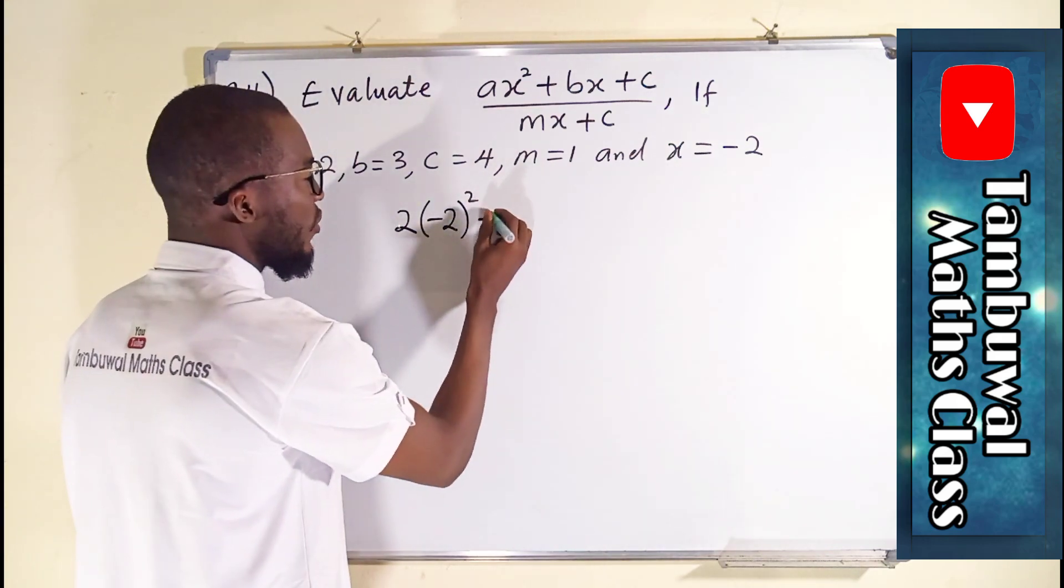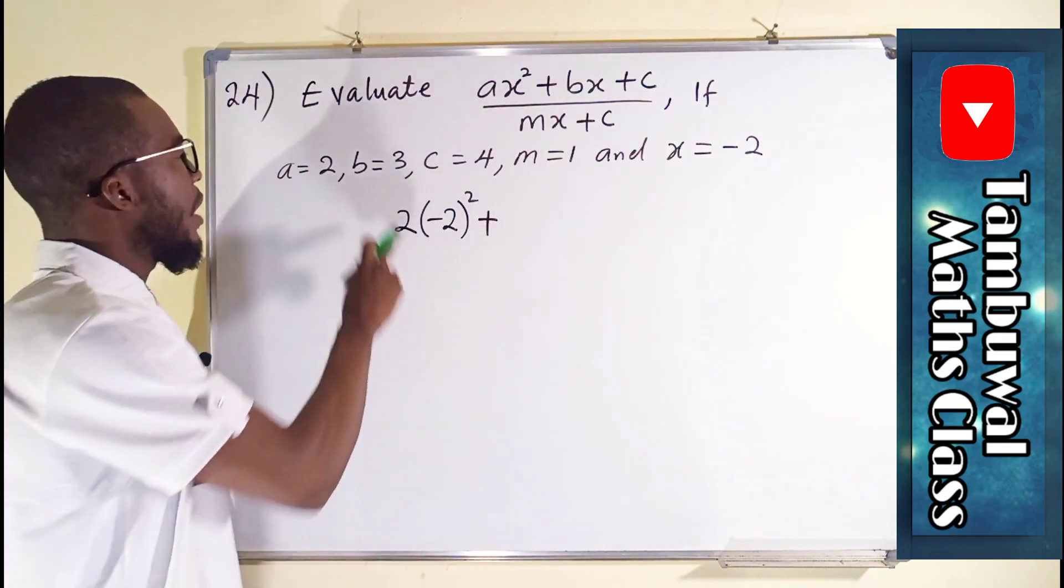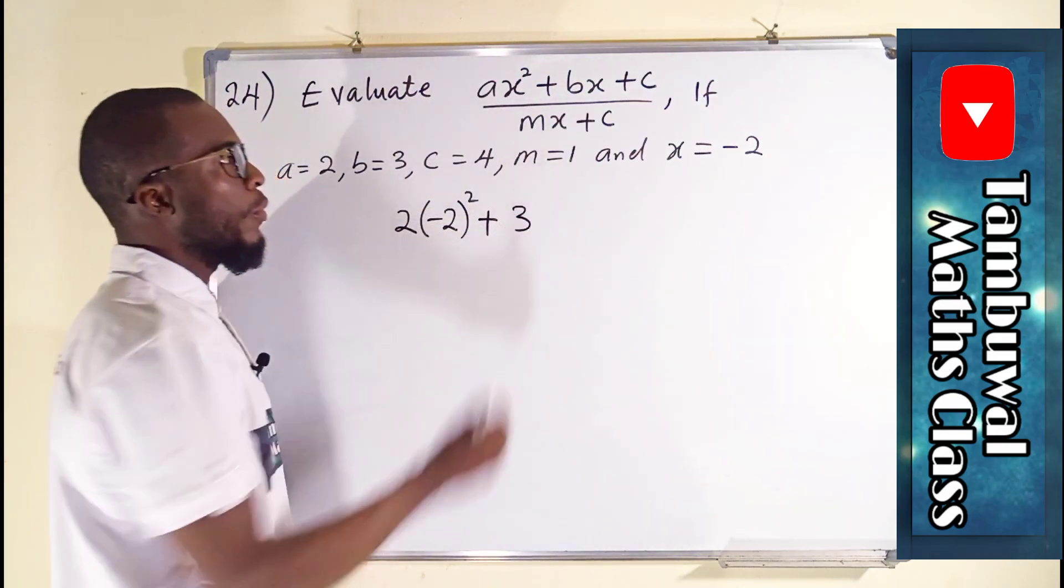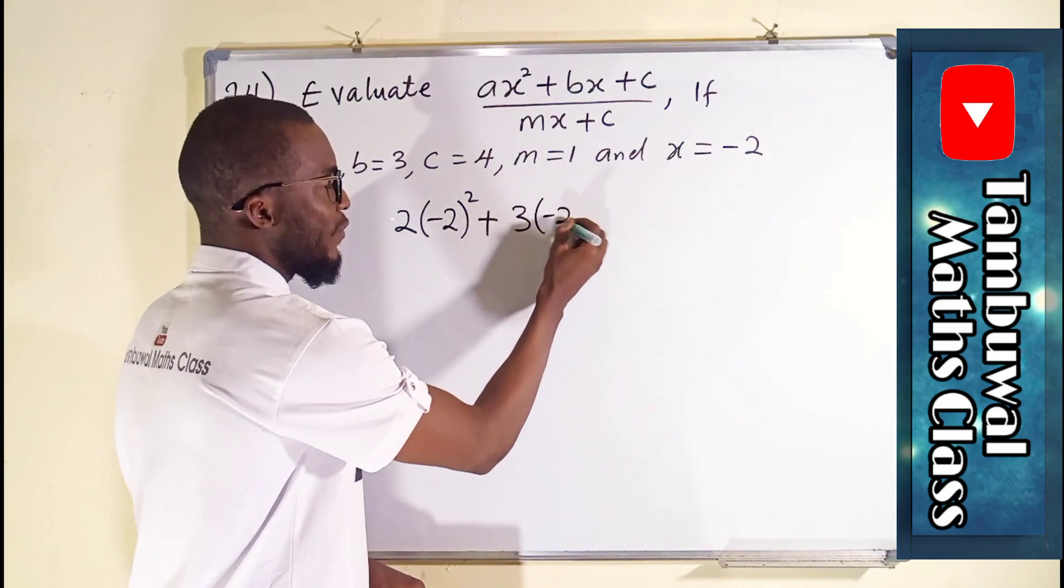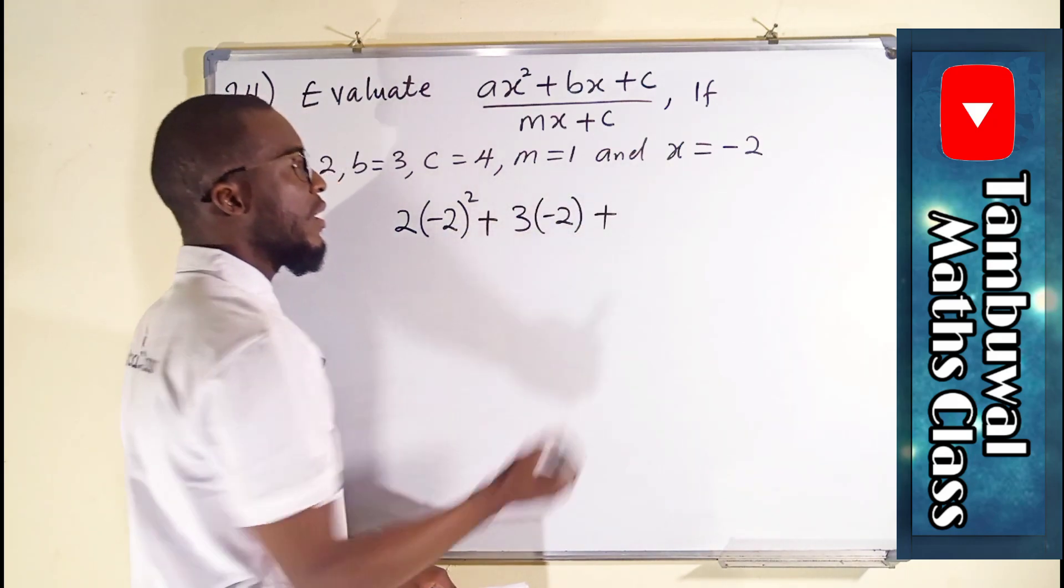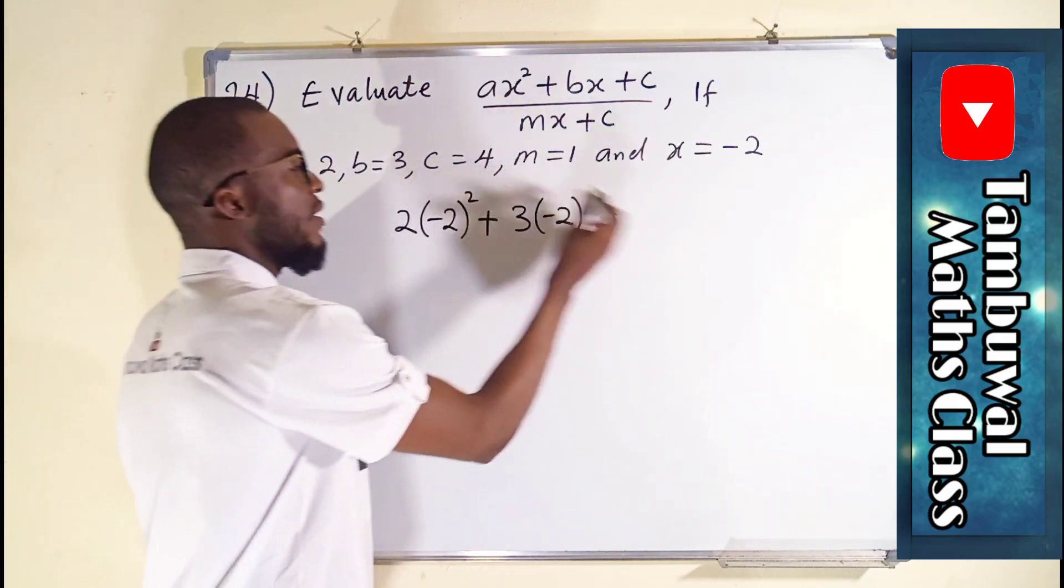Plus b times x. Our b is 3 multiply by x, and x is negative 2, so you write negative 2. Plus the last one which is c, and c is 4 here.